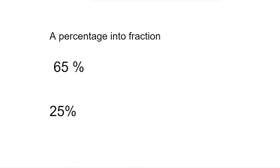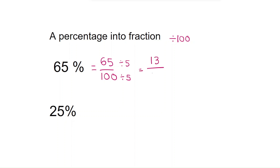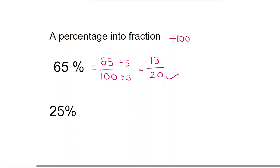Hello friends. How to convert a percentage into a fraction? You always have to divide by hundred. Sixty-five percentage — write it as a fraction: sixty-five by hundred. Both numerator and denominator are divisible by five, giving thirteen by twenty. Thirteen by twenty is the fraction.